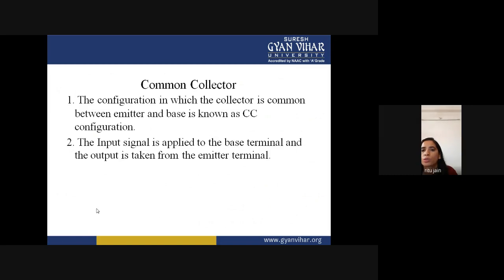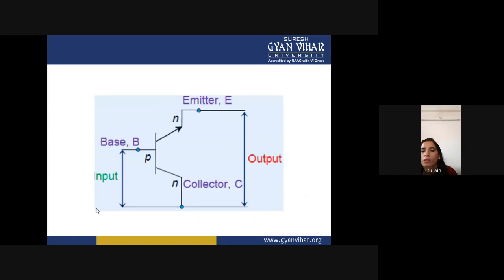In common collector configuration, the collector terminal is common between both input and output. The input signal is applied to the base terminal and the output is taken from the emitter terminal. In this configuration the input current is the base current, input voltage is VBC, output current is the emitter current, and output voltage is VCE.